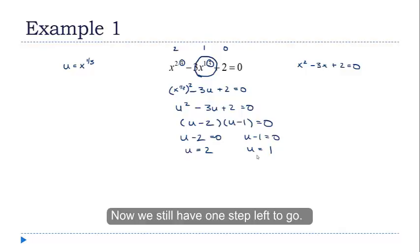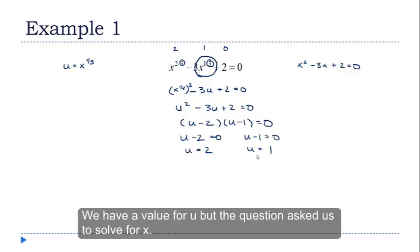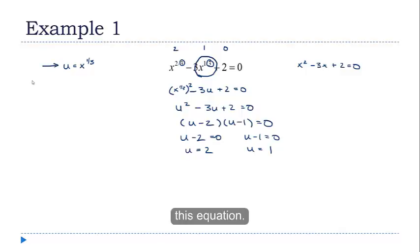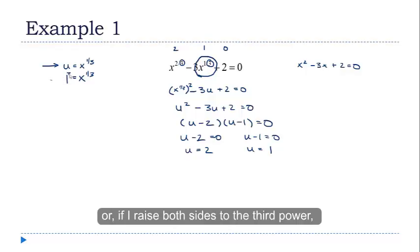Now, we still have one step left to go. We have values for u, but the question asked us to solve for x. So to go from u back to x, I'm just going to use this equation. If I substitute 1 for u, I get x to the 1 third equals 1. Or if I raise both sides to the 3rd power, x equals 1 to the 3rd power, which is just 1.